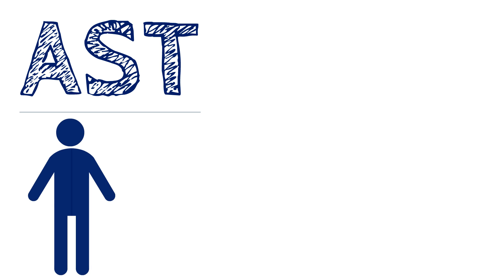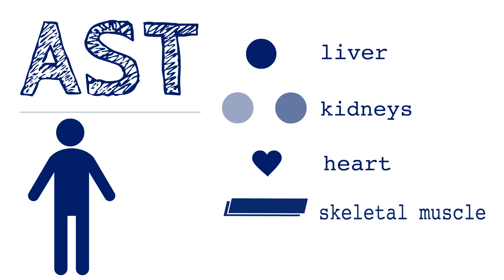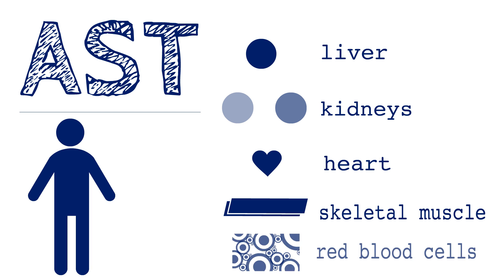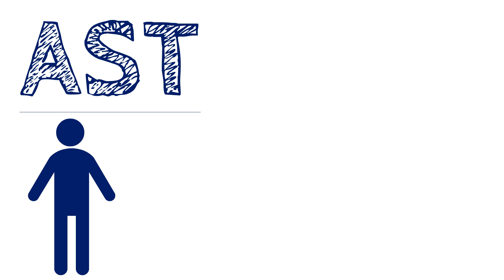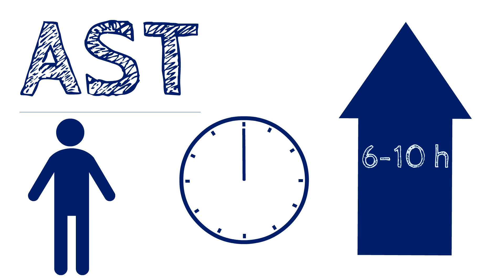Aspartate aminotransferase. AST is found in the liver, kidneys, heart, skeletal muscle and red blood cells. It normally circulates the body in low levels. When severe damage has occurred, levels will rise after 6-10 hours and will remain elevated for around 4 days.